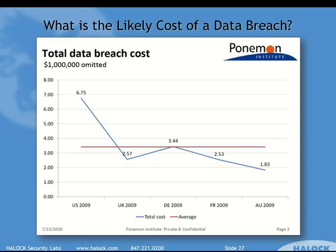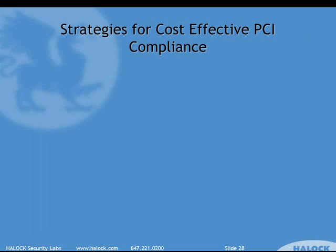What you have to think about is how that compares to the alternative — what if you have a breach? Ponemon's annual study of the cost of a data breach shows the average cost in the U.S. is significantly higher than in other areas, at approximately $6.75 million average cost of a breach. Bottom line: getting compliant is going to be a lot less than the cost of a breach in most cases.